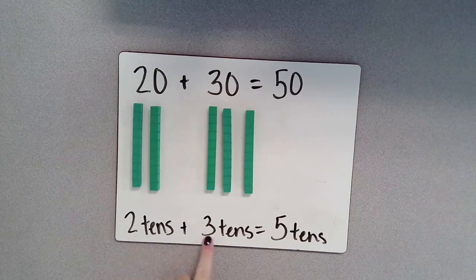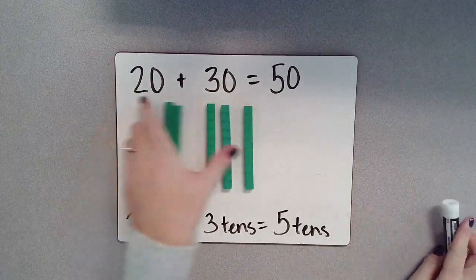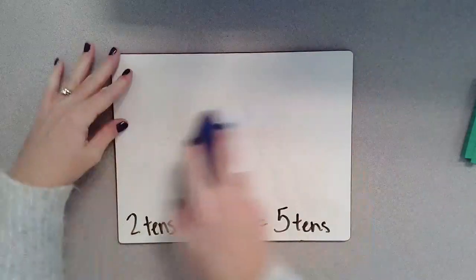I can also think about it as 2 10s and 3 10s give me 5 10s. And again, think about 2 and 3 are number partners for 5, which can help you solve that problem. All right, we're going to switch gears just a little bit and we're going to do some subtraction.